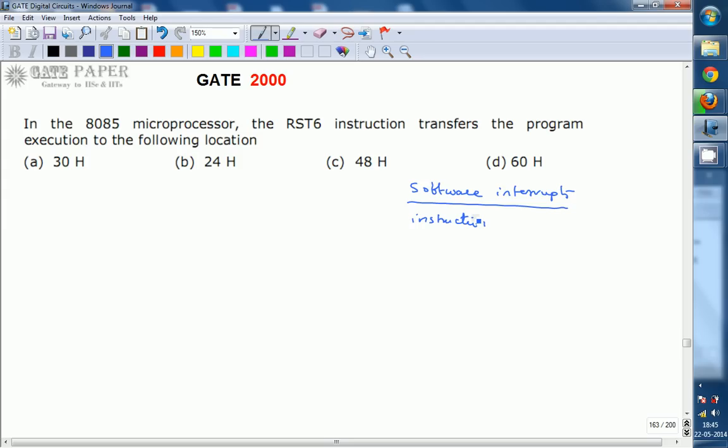But these are RST6, RST0, RST1, RST2 like this RST till 7. There are total 8 software interrupts available. You can write these instructions in the program wherever you require an interrupt. This is the instruction type and the location where the subroutine for that software interrupt is available.